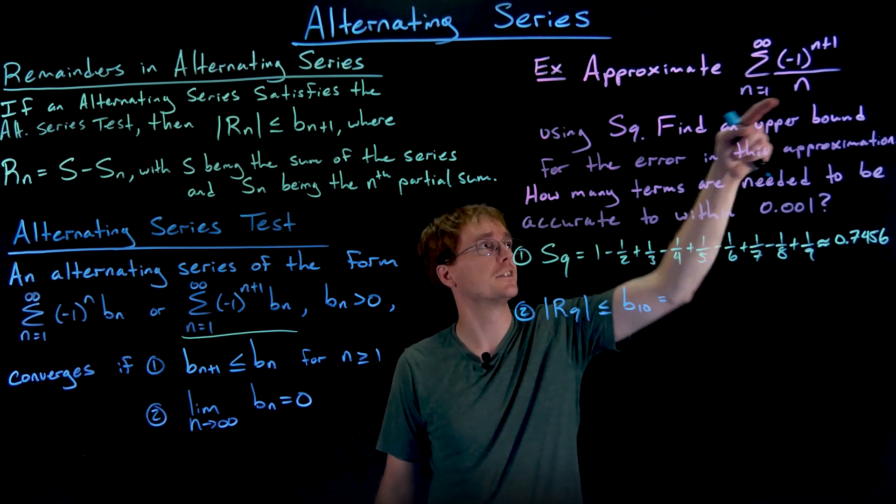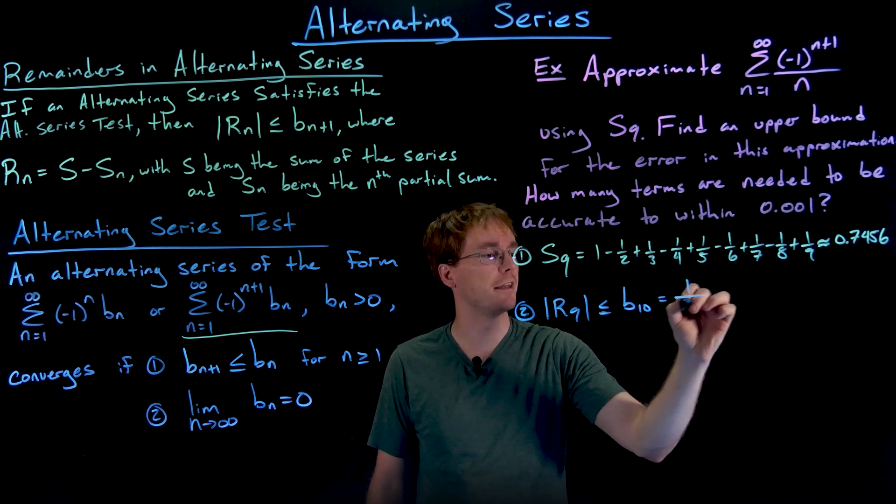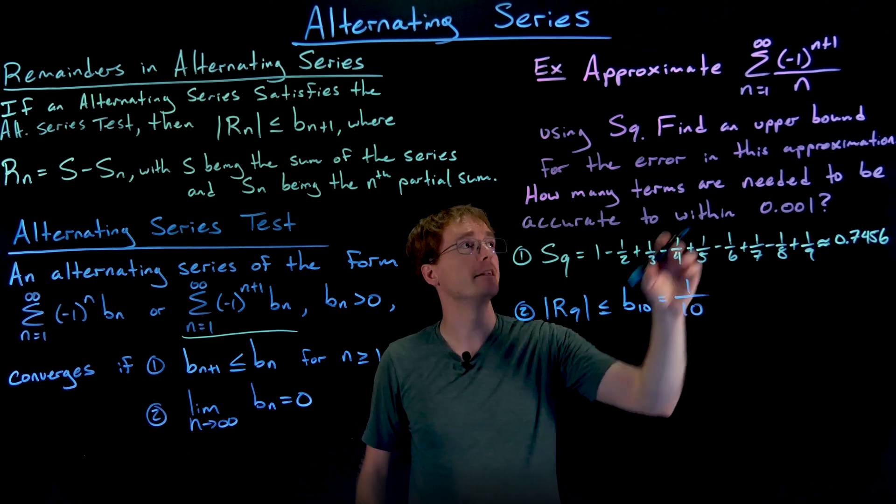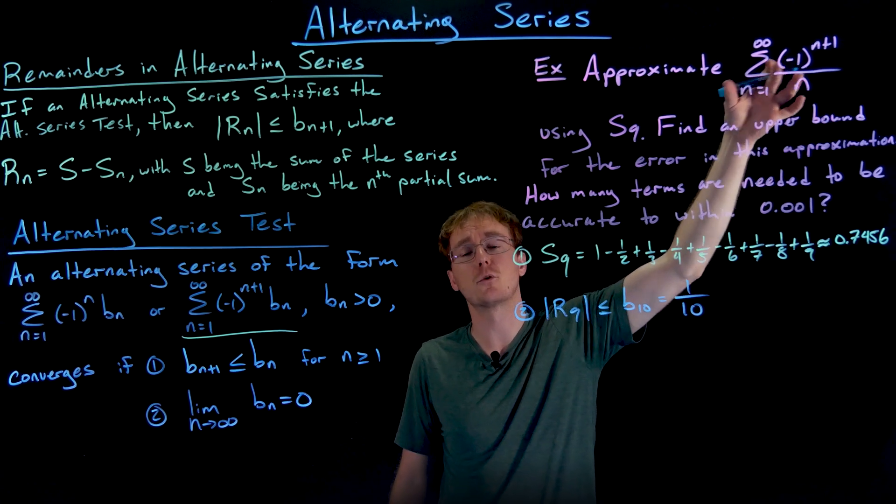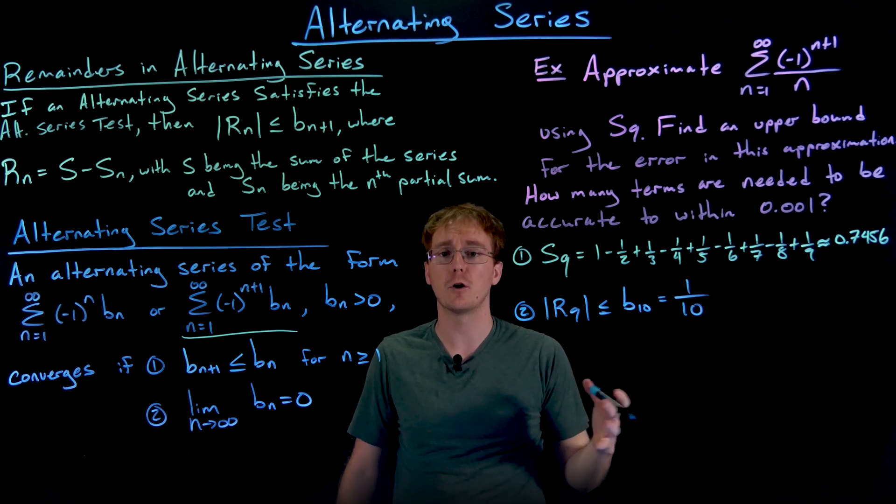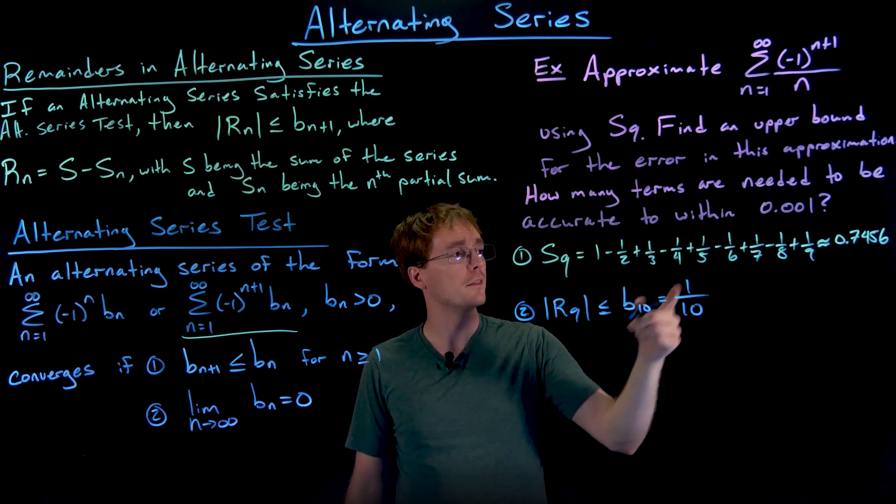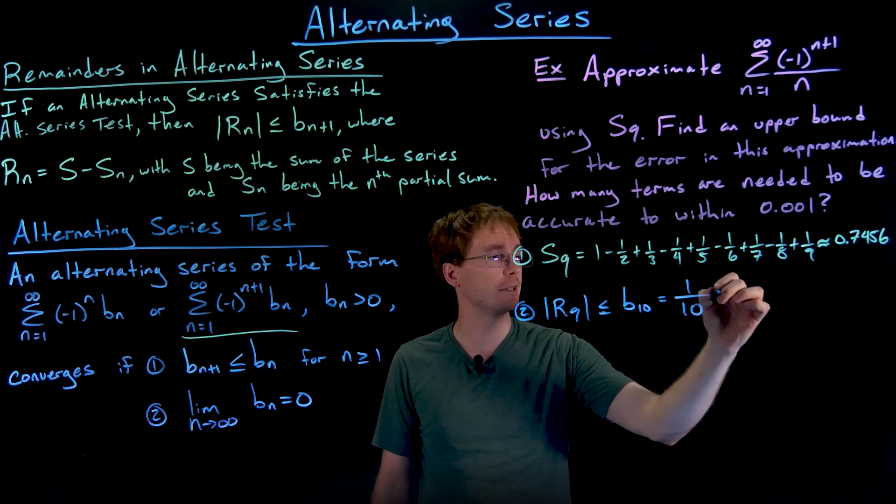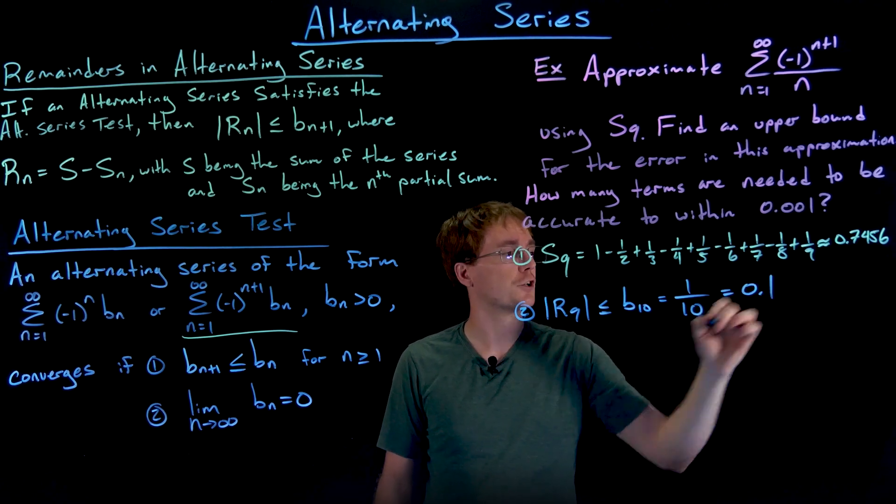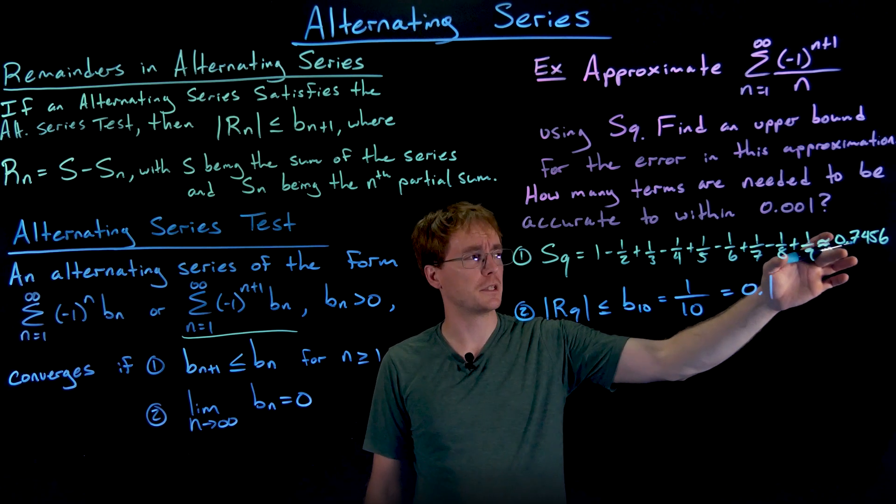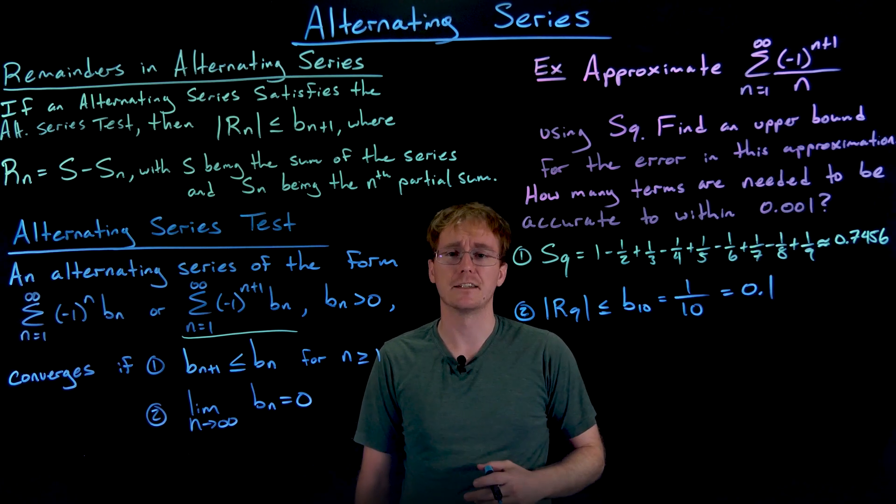Our tenth term is going to be one over ten. Remember, the b sub ns are just representing the actual term in our series, ignoring the powers of negative one or the alternation, so those are always positive here. And so we know that the approximation we used here is going to be accurate to 0.1 or about one decimal place. So we know it's going to be between like 0.6 and 0.8, essentially.